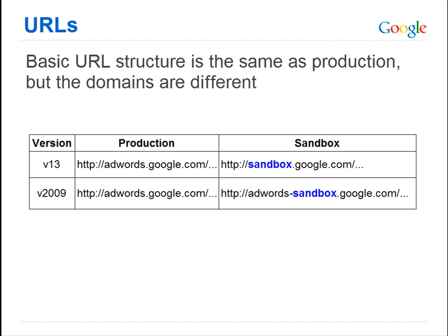Requests made to the Sandbox must be submitted against a different URL than production. The basic URL structure is the same, and only the domain is changed. In the V13 version of the API, the domain is sandbox dot google dot com. And in the V2009 version of the API, the domain is adwords dash sandbox dot google dot com.